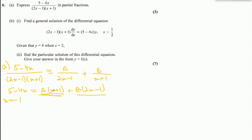When x equals negative 1, negative 1 plus 1 is zero. So 5 minus 4 times negative 1 equals 9. The a term vanishes, leaving b times 2 times negative 1 minus 1, which is negative 3b. Therefore b equals negative 3.